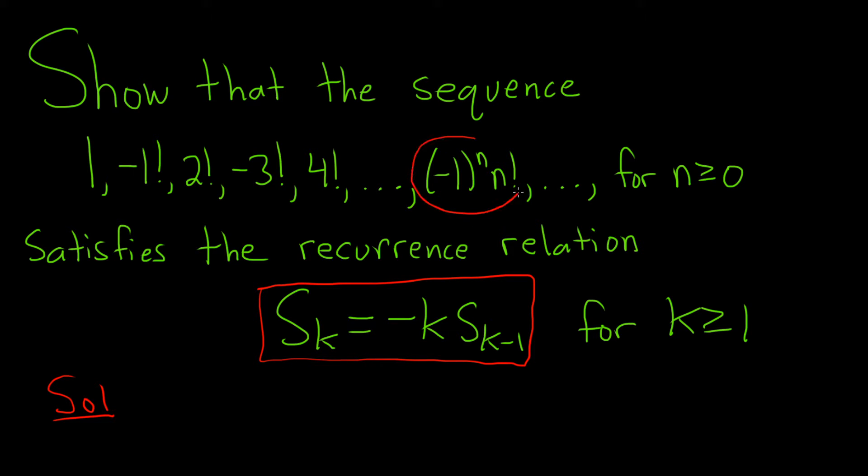This here is the nth term, it's given. So we're going to start by letting S sub n be equal to negative 1 to the n times n factorial, and this is valid for n greater than or equal to 0.